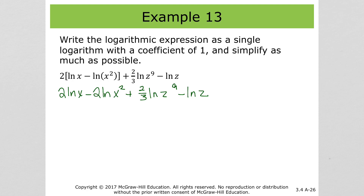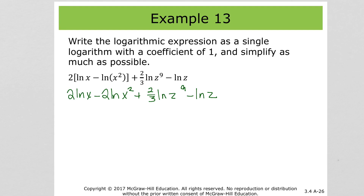Now take those 2's and place them as exponents, and also the 2/3. We get natural log of x squared minus natural log of x to the 4th (since squaring x squared means multiplying exponents: 2 times 2 = 4). Then natural log of z to the (2/3 times 9), which is z to the 6th.